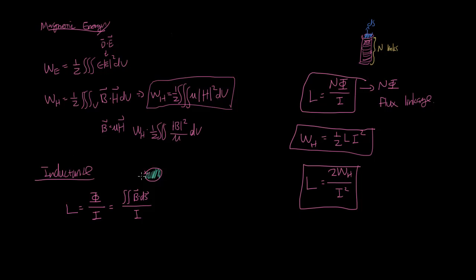And then we also talked about the inductance, which is the ratio between the total amount of flux that's generated by a current loop divided by the amount of current it took to create that.